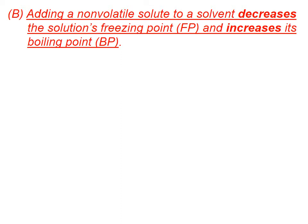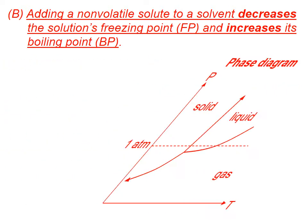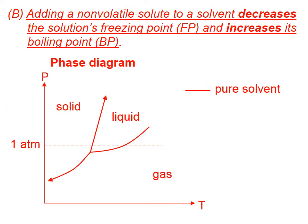In this lesson, we're going to continue talking about colligative properties with regard to freezing point and boiling point. Adding a non-volatile solute to a solvent decreases the solution's freezing point and increases its boiling point. We're going to add a non-volatile solute, like salt, to some solvent — let's say water — and show you, using a phase diagram, how we can visualize what's happening here.